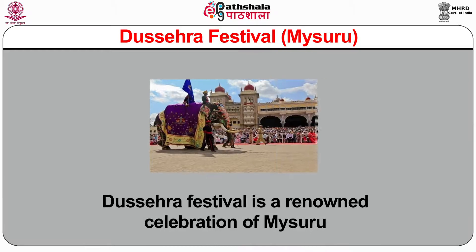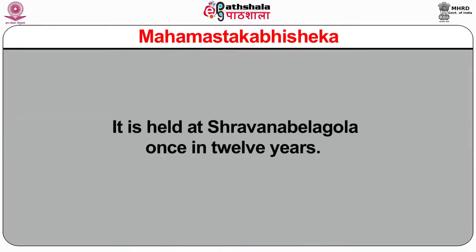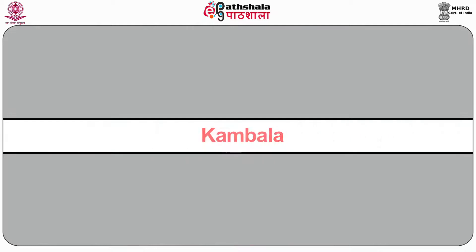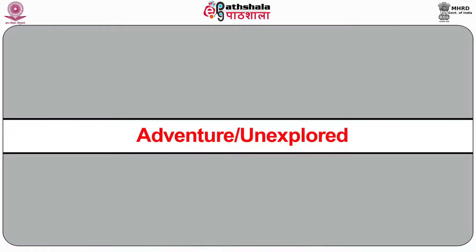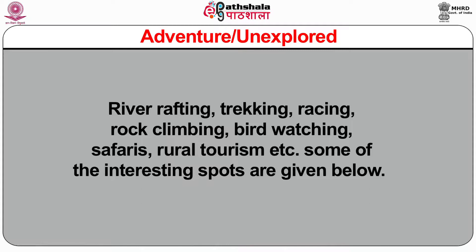Seasonal events in Karnataka include the Dasara festival, a renowned celebration in Mysore. Maha Mastakabhisheka is held at Shravanabelagola once in 12 years. Kambala is a farmer's sporting event celebrated in coastal and rural areas. Other major festivals include Ayudha Puja, Ugadi the Kannada New Year, and Shivaratri. The state also offers immense adventure opportunities such as river rafting, trekking, racing, rock climbing, bird watching, safaris, and rural tourism.